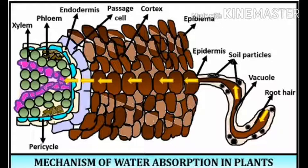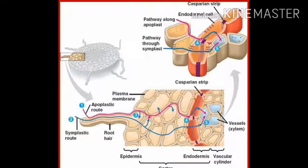These root hairs are unicellular, thin-walled outgrowths of the epiblema. Here, in the root section, it is known as epiblema, which is called epidermis in case of stem outer layer.